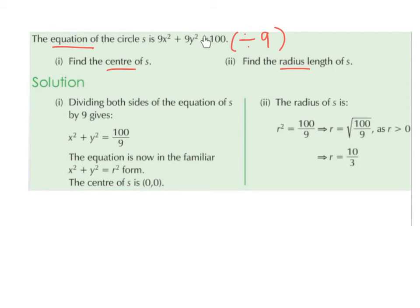If you're ever given an equation of a circle and asked to find the center, the first thing to do is see if you can divide across by the same number to get x² and y² on their own. If you can achieve that form, then you know the center is (0, 0). In the next video, we'll look at circles with a center that is not (0, 0), which will not be in this format.